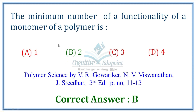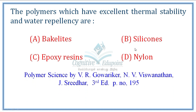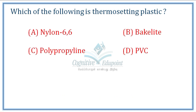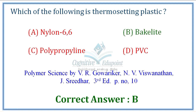Next question: The polymers which have excellent thermal stability and water repellency — these are silicones. Correct answer is B. Another easy question: which of the following is a thermosetting plastic? Nylon, polypropylene, and PVC are thermoplastics. Bakelite is a thermosetting plastic. Correct answer is B.